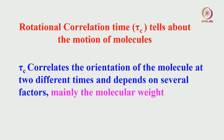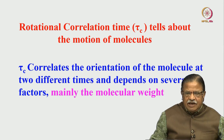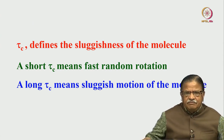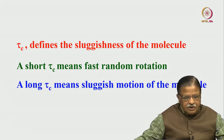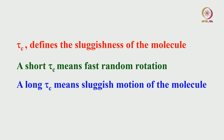The correlation time tells about the motion of the molecules. It is defined as τ_c — it correlates the orientation of the molecule at two different times. In principle, it is the time required for the molecule to undergo one rotation by one radian. It depends upon the molecular weight: when molecules are tumbling, the size or weight matters. The correlation time τ_c defines the sluggishness of the molecule. A short correlation time means fast random motion; a long correlation time means sluggish motion of the molecule.